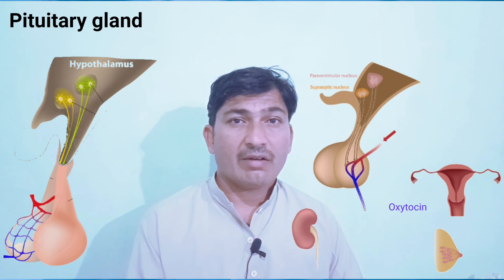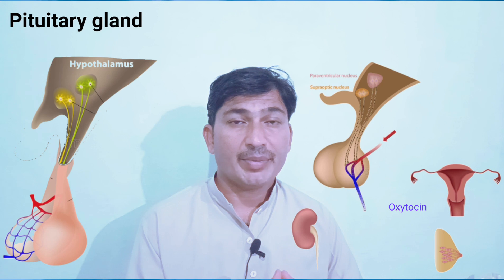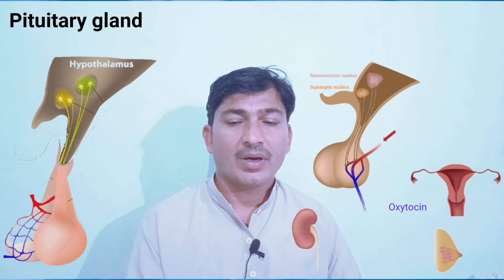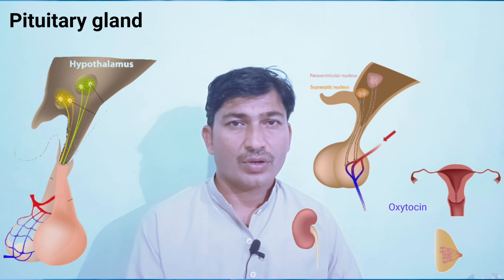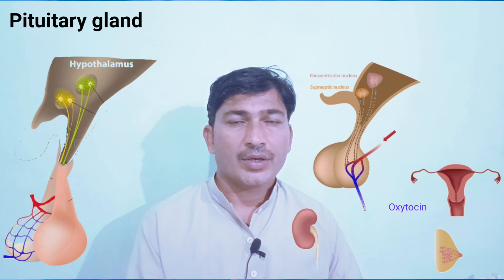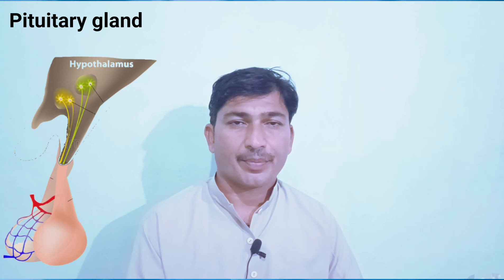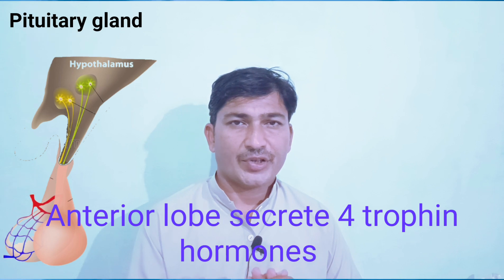The second important hormone of the posterior lobe is oxytocin. Oxytocin is also known as the love hormone or bonding hormone — it increases attachment. It stimulates the release of milk in mothers and is important during the delivery period. When oxytocin increases in the blood, it reduces the amount of progesterone so that the uterine muscle relaxes and delivery becomes easier.